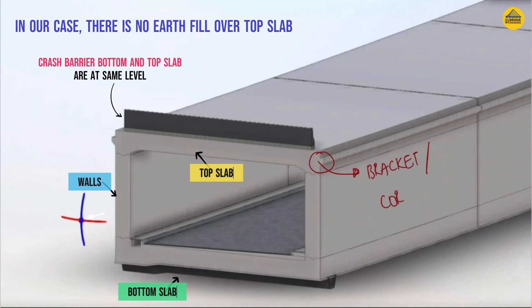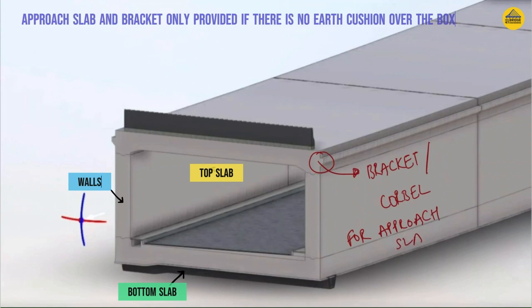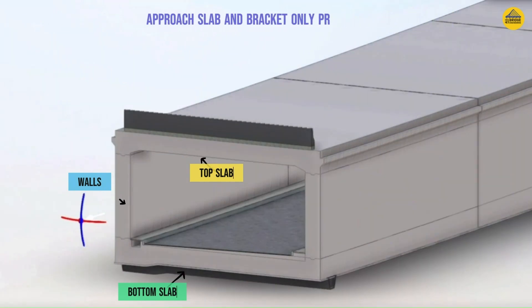Meanwhile, have a look at the main structural components: the top slab, the wall, and the bottom slab. Another component is the bracket or corbel that is used to support the approach slab. This is only possible if there is no earth cushion. If there is earth cushion, no approach slab will come and there will be no requirement of corbels or brackets.